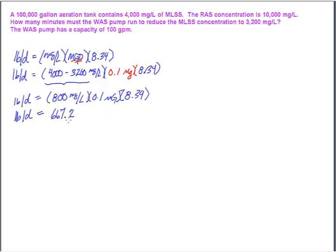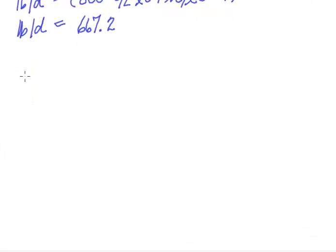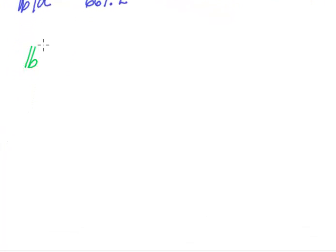That's how many pounds I want to pull out of the system. Now they've given me another piece of information, which is my RAS concentration. What we're going to do is take the pounds formula and just go backwards now. Because what I'm interested in this time is not the milligrams per liter that I know, and I know pounds. The piece that I don't know now is how many million gallons I actually need to waste on this particular day.